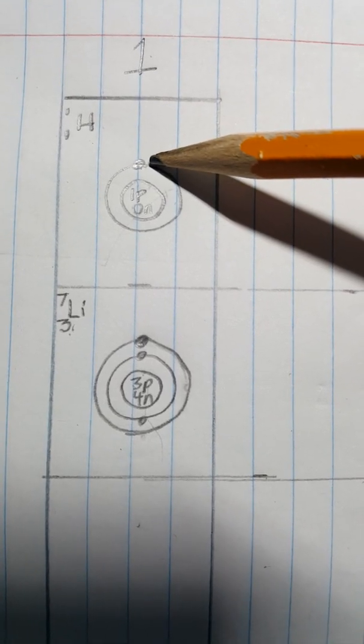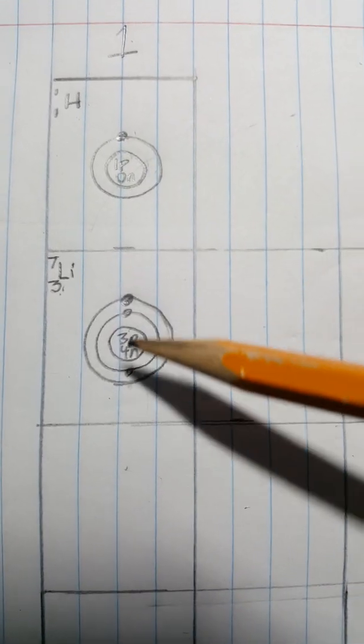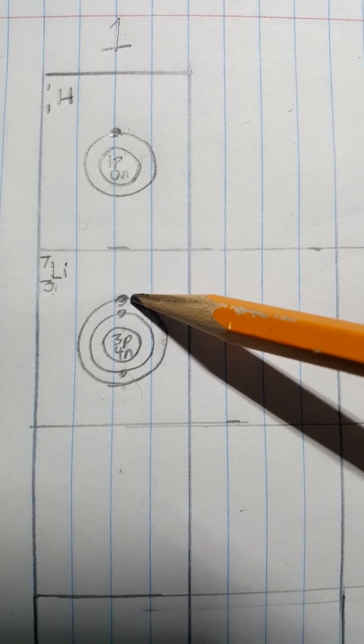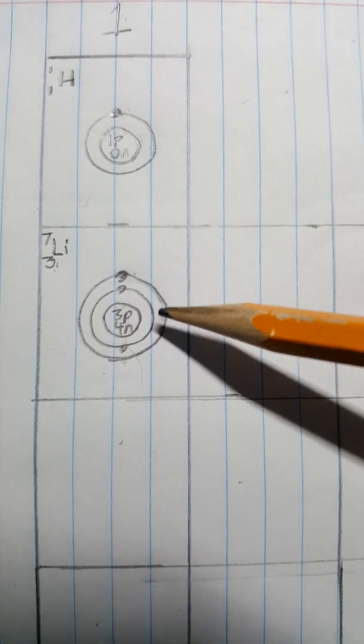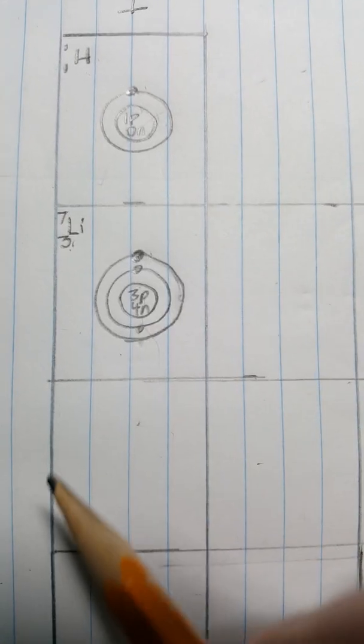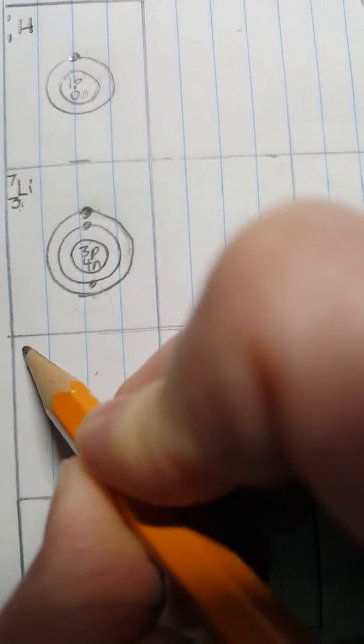You can see a pattern starting to develop. We're in Family 1. Look, Hydrogen has one valence electron. Lithium also has one valence electron, one outer electron. Okay, so underneath Lithium we have Sodium.